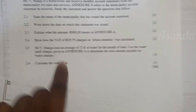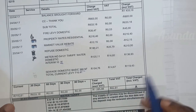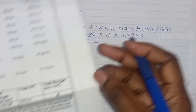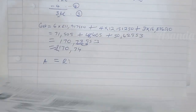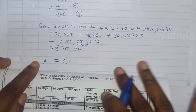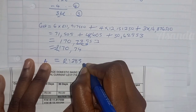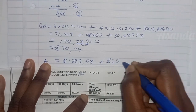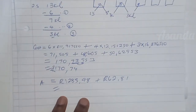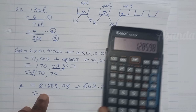Last question: Calculate the value of A. A equals 1,285 rands and 98 cents plus 62 rands and 81 cents, and then we get A. That is the end of question two.